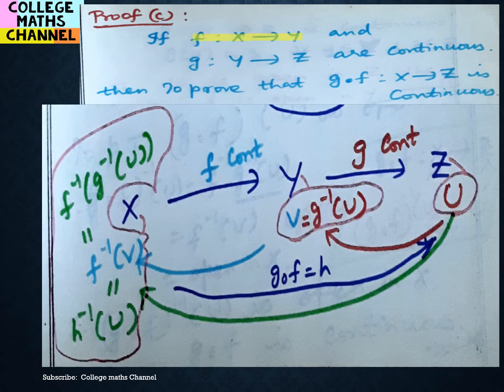F from X to Y and g from Y to Z are both continuous. To prove that g-composite-f from X to Z — that is, f's domain and g's range — that function is also continuous. Let's see how the proof works with the construction.